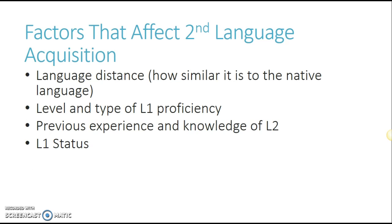As students are learning the English language, there are several things that are going to factor into it: how similar their first language is to the second language they're trying to learn; the level of their native language proficiency — if they were struggling with language development in their other environments, then they will struggle with it here and we need to take that into consideration; their previous experience and knowledge of the English language; and their native language status — if they struggled with their native language, they're going to have a harder time acquiring a second language.